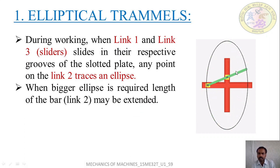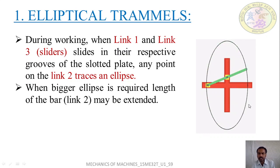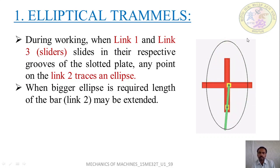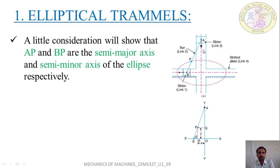To get a bigger ellipse, the length of link 2 - the green-colored bar - can be extended. Let us verify whether the path traced by this bar (link 2) is indeed an ellipse by deriving an equation.